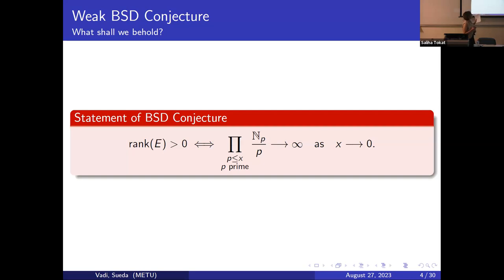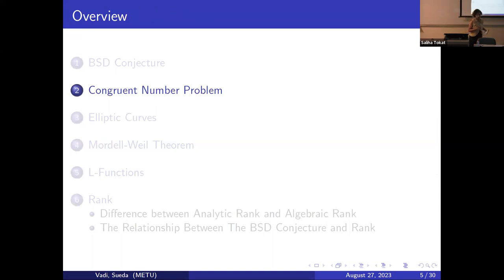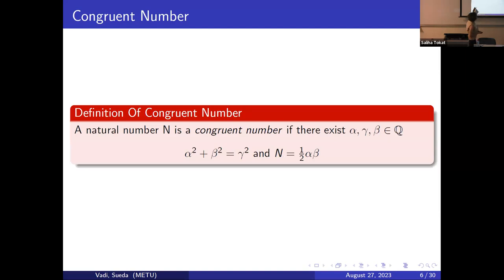Before showing these tools, I'll provide some motivation for working on the BSD conjecture, which is the congruent number problem. What is a congruent number? It's a basic definition, actually. A congruent number is the area of a triangle expressed as triples of rational numbers. In other words, we can say a natural number n is a congruent number if there exists a rational right triangle with sides alpha, beta, gamma such that n equals one-half alpha times beta.